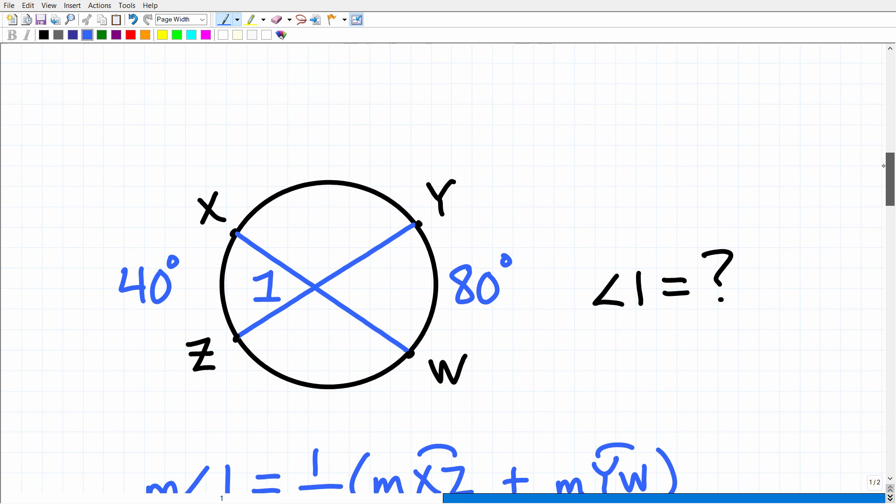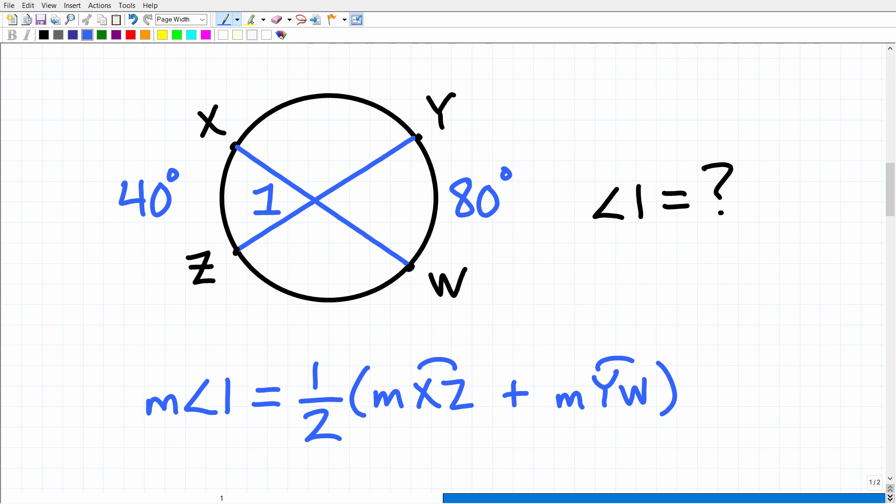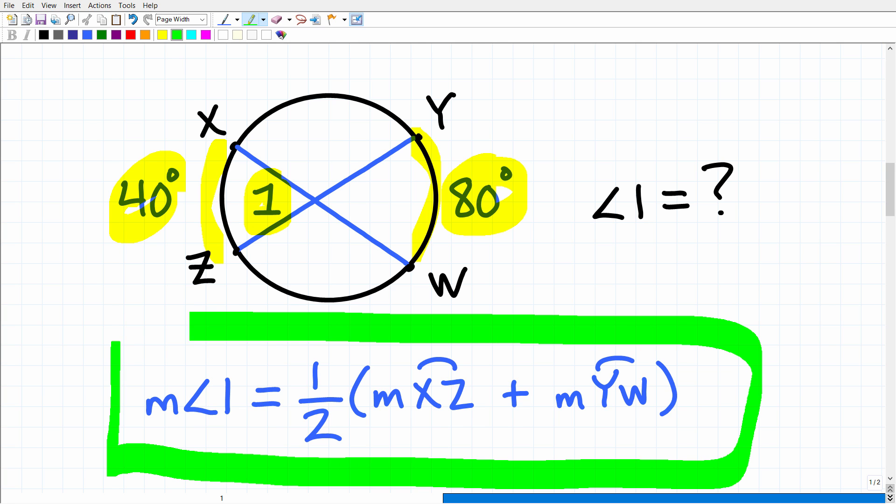So we have a circle, and we have some arcs here. So one of the arcs is this right here, XZ. That's arc XZ, and that's 40 degrees. The other arc here is YW, and that's 80 degrees. So we have these two chords right here. We're looking for angle 1. So we need to remember this formula right here. The measure of this interior angle formed by these two chords is equal to 1 half the sum of the arcs formed by these chords.